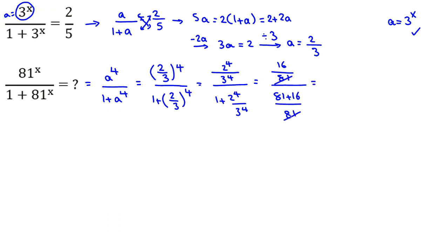Here we can cancel denominators from both numerator and denominator because we can multiply both of them by 81. It will be 16 over 16 plus 81, which is 97. So, the answer equals 16 over 97.